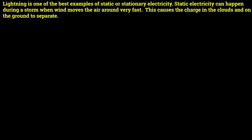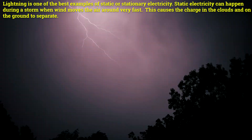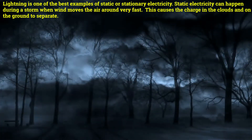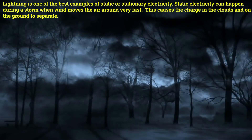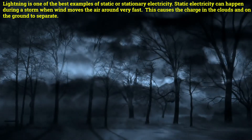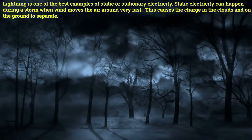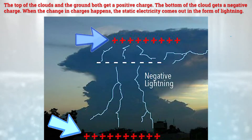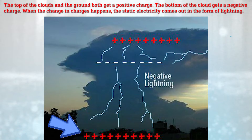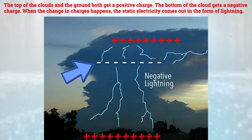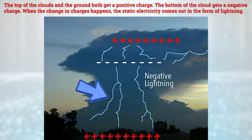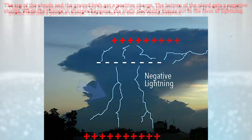Lightning is one of the best examples of static or stationary electricity. Static electricity can happen during a storm when wind moves the air around very fast. This causes the charge in the clouds and on the ground to separate. The top of the clouds and the ground both get a positive charge. The bottom of the cloud gets a negative charge. When the change in charges happens, the static electricity comes out in the form of lightning.